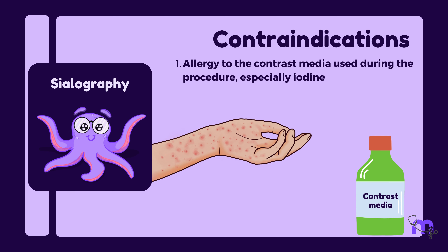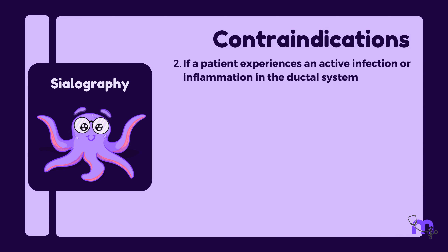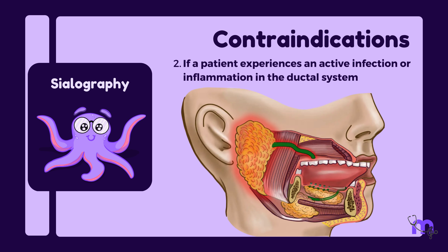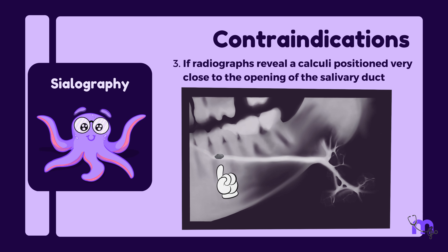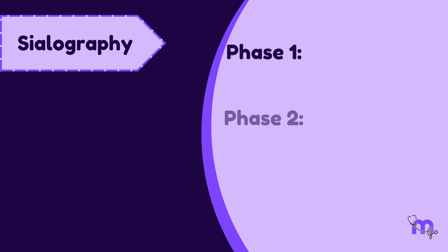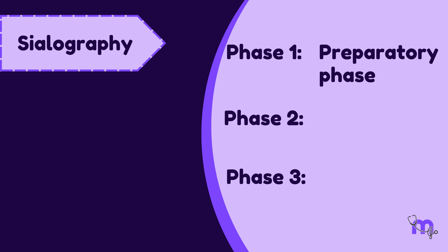While sialography offers valuable insights, it is not suitable in some instances. If the patient has a known allergy to the contrast media used during the procedure, especially iodine, sialography is contraindicated. It is also best avoided if a patient experiences an active infection or inflammation in the ductal system, as the lining of the ducts is already compromised — injecting contrast medium could cause it to leak into surrounding tissue, leading to a severe foreign body reaction and significant pain. Additionally, if radiographs reveal a calculus positioned very close to the opening of the salivary duct, sialography might not be ideal, as the pressure of injecting the dye could push the stone further into the duct, causing additional problems.